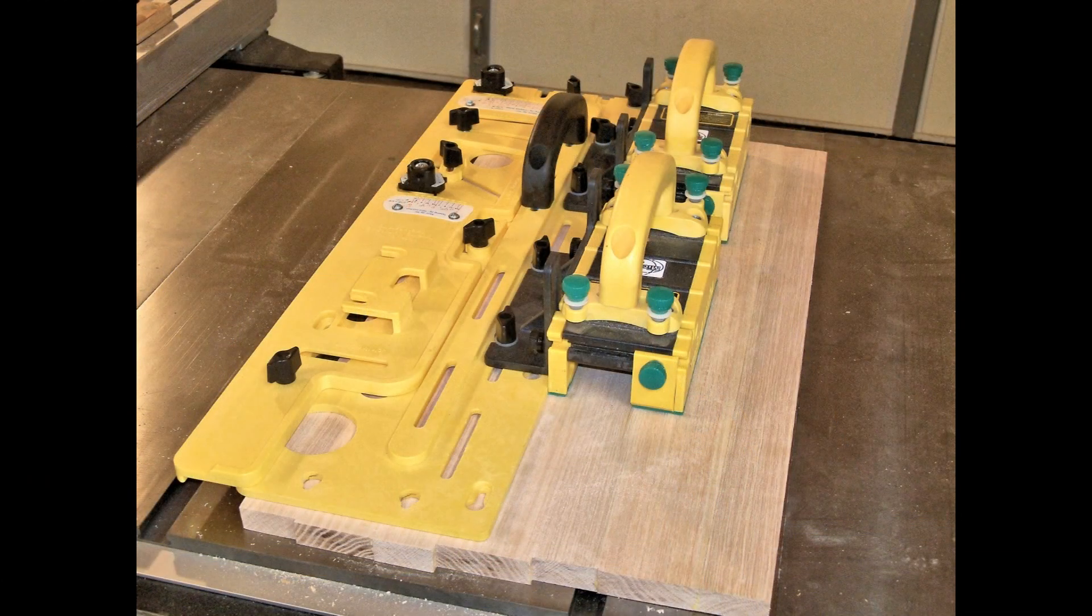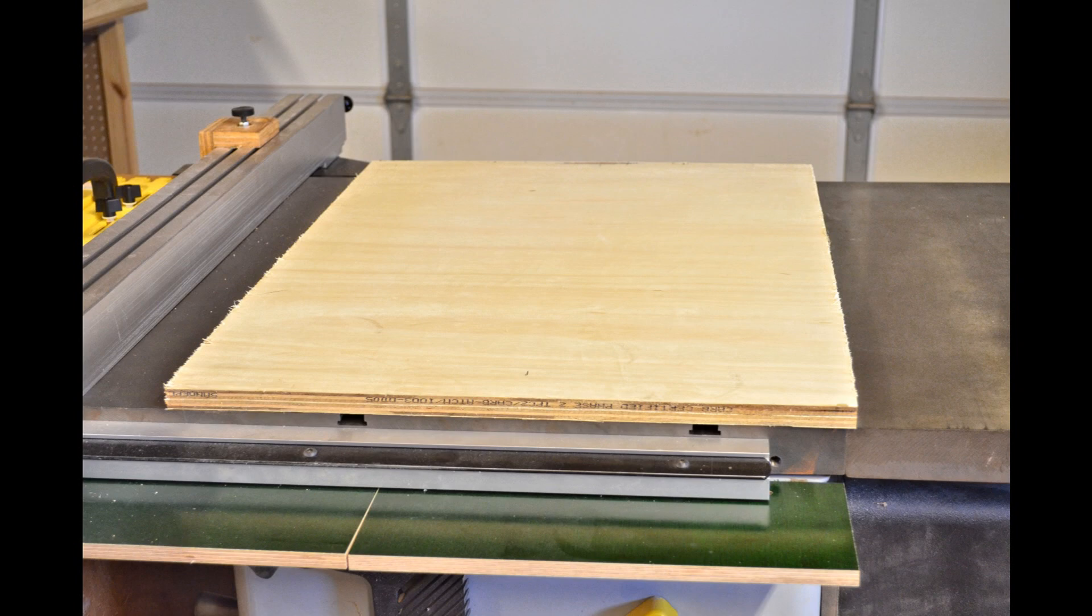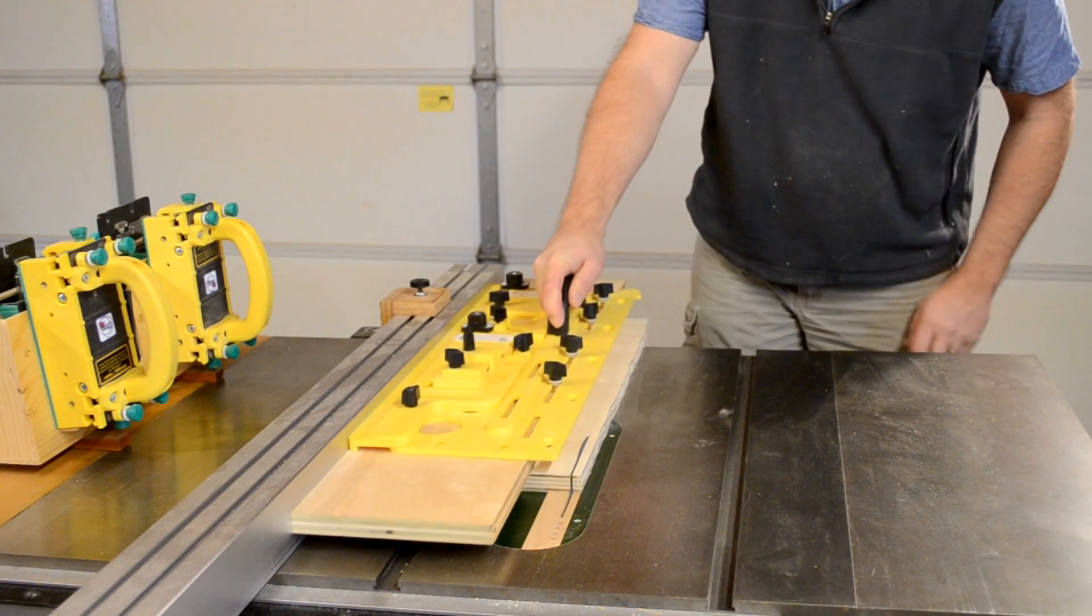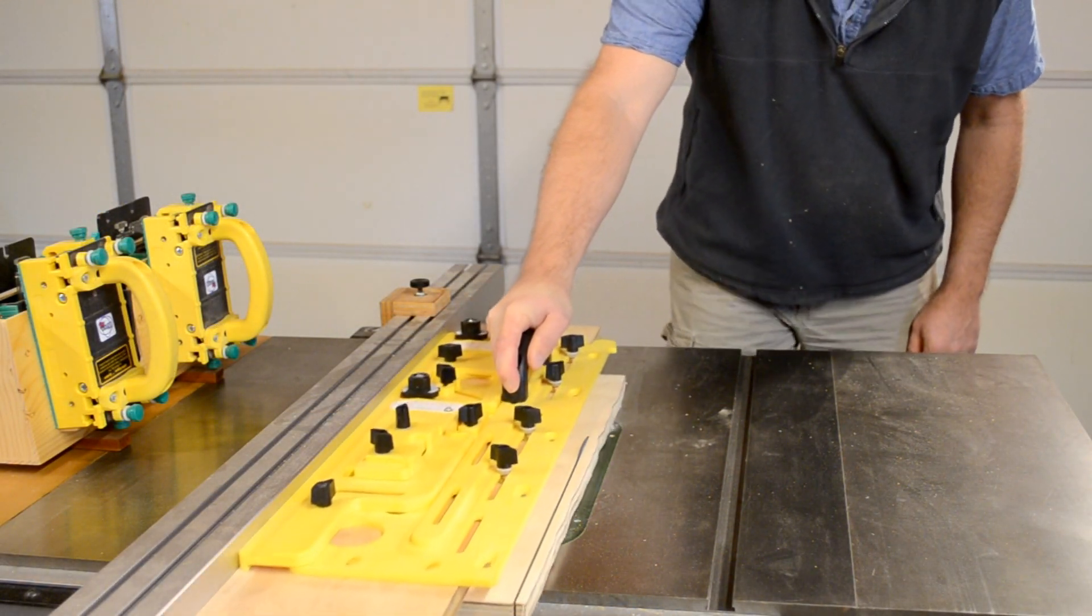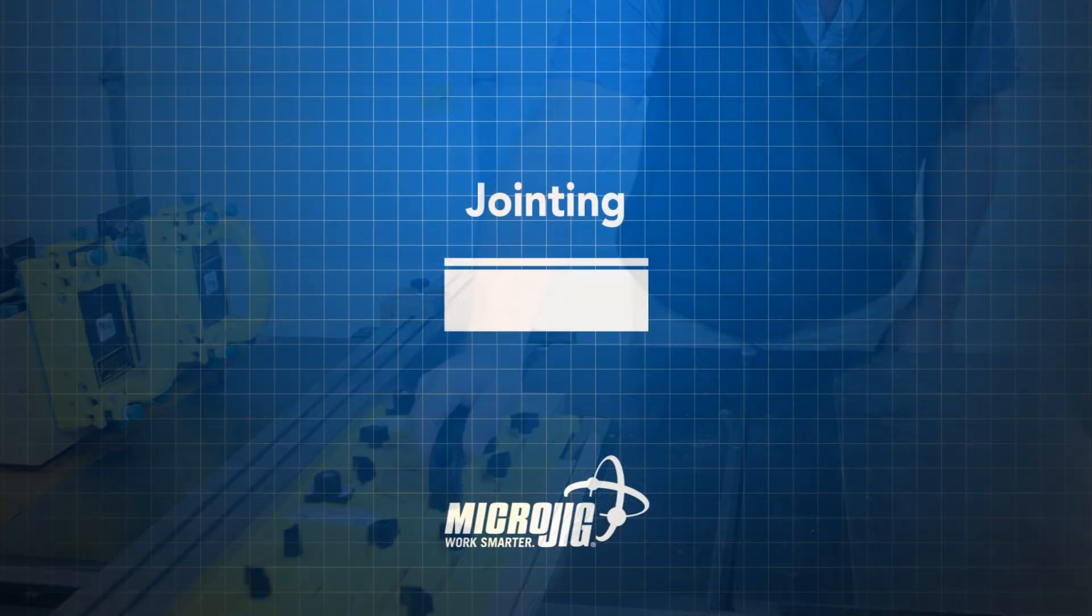Rough lumber, glued up panels, or rough cut plywood - all of these can be straightened quickly, easily, and safely using the jointing feature of the Microjig Microdial Taper Jig.